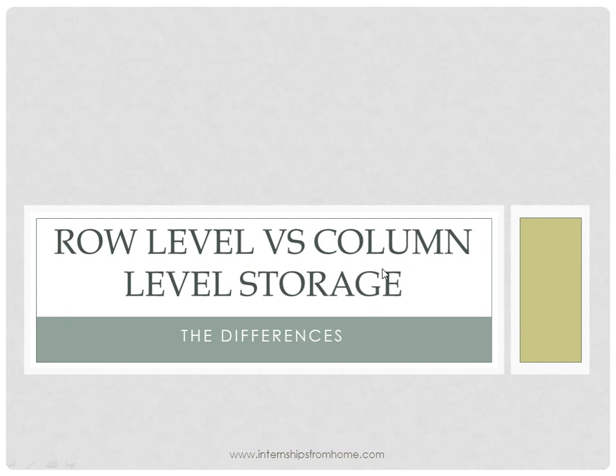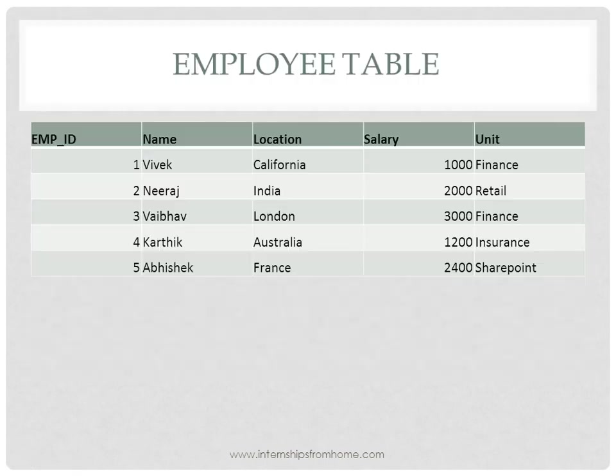Let's understand this concept with the help of a simple employee table. We have 5 columns in the employee table: employee ID, name, location, salary, and unit. For the simplicity of understanding, we have taken only 5 rows.